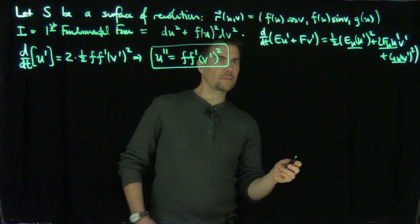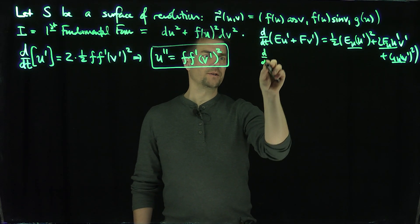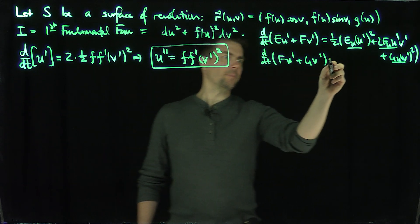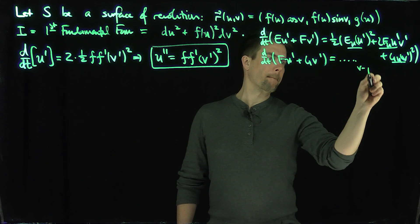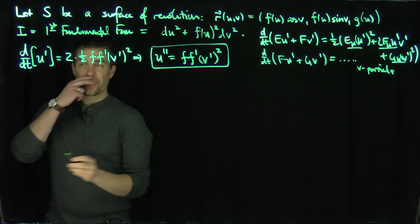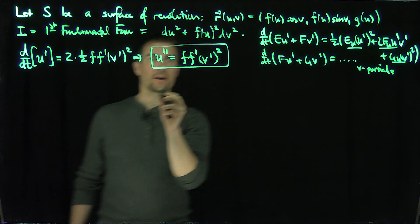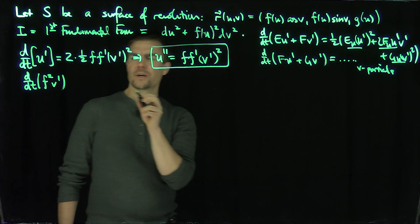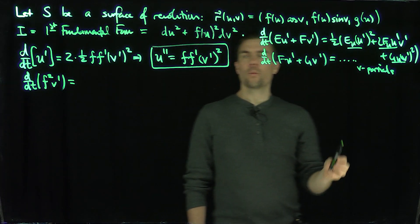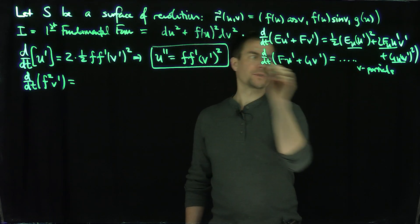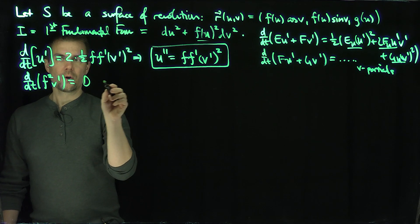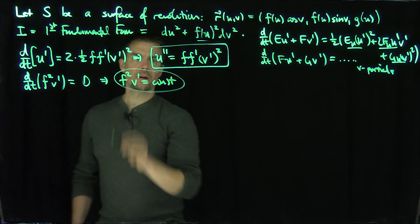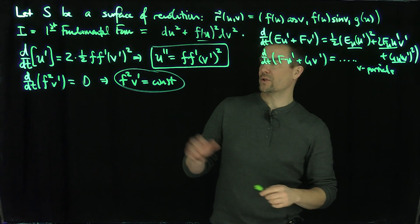Now let's write down the second geodesic equation. It has the form d/dt(F·u' + G·v') equal to the same thing with v-partial derivatives. Since F = 0 and G = f², we get d/dt(f²·v') = 0, because all v-derivatives of E, F, G are zero. This means f²·v' is a constant — an important property for Clairaut's result.